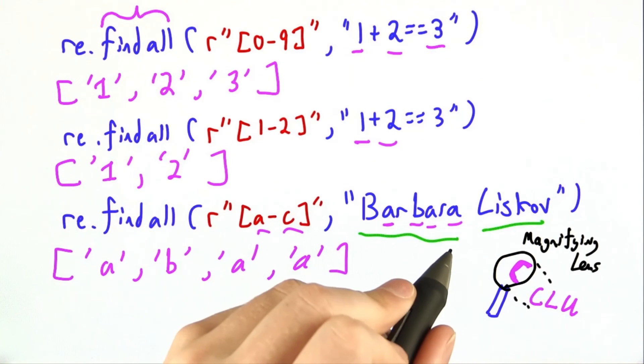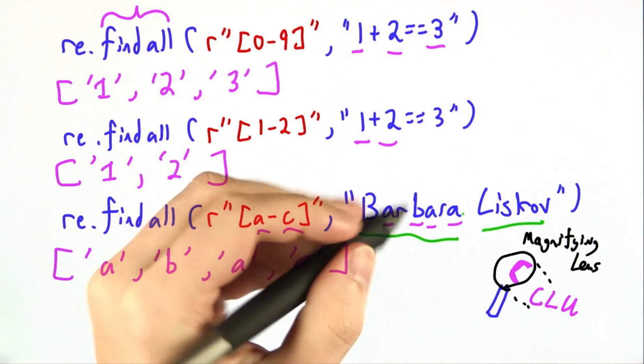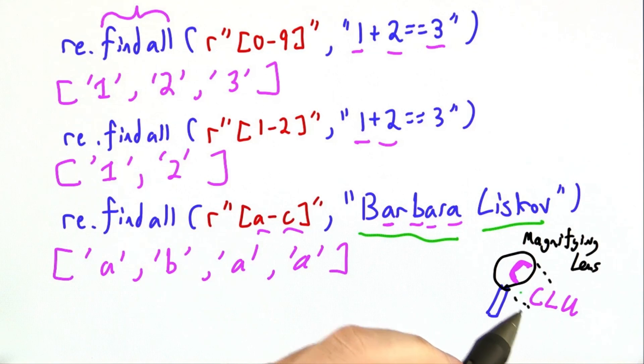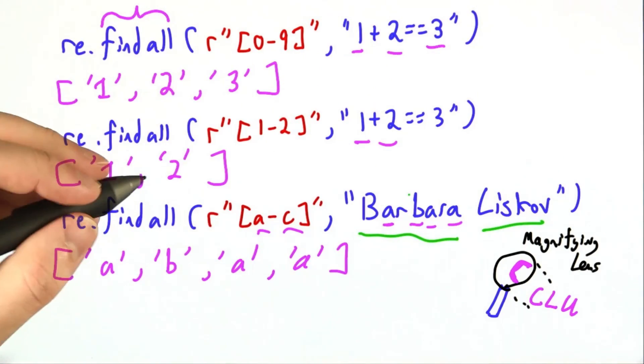Barbara Liskov is a well-known computer scientist famous for her work in object-oriented programming and systems programming. Among other things, she invented the language Clue, which I'm showing here with a bit of a magnifying lens. She received the Turing Award, the highest honor in computer science.